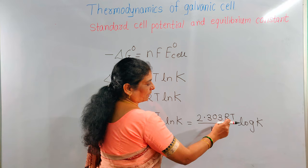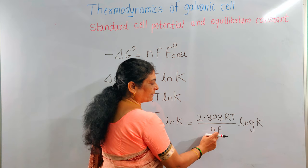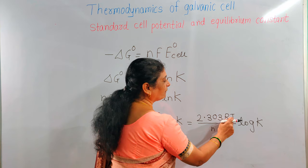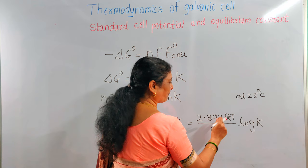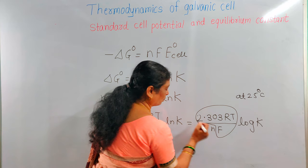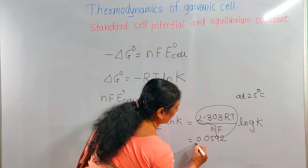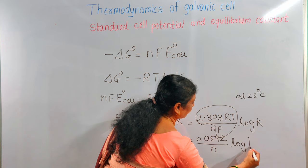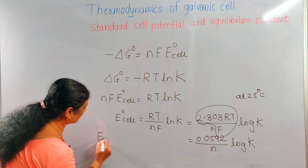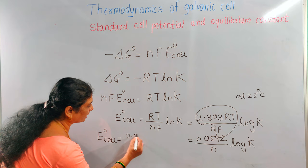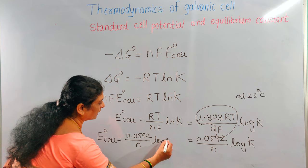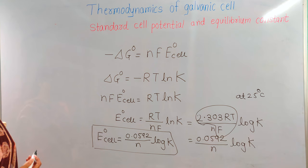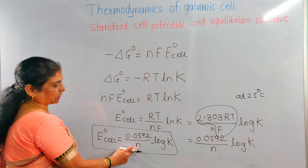At 25°C, substituting the constant values of R, T, and F — where F = 96500 coulombs — the equation simplifies to: E°_cell = 0.0592 / n × log K. Here E°_cell is the standard cell potential, n is the number of moles of electrons involved in the cell reaction, and K is the equilibrium constant.